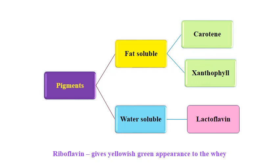Here we will learn about the pigments present in milk. There are fat-soluble and water-soluble pigments. Among fat-soluble pigments, the major one is carotene and next is xanthophyll. Carotene gives the yellowish color to milk, mostly in cow milk and other species, but not in buffalo milk, where it is in a different form making the milk white. Water-soluble pigments include lactoflavin and riboflavin, which is vitamin B2, giving a greenish appearance mainly visible in whey when casein is removed during curdling.